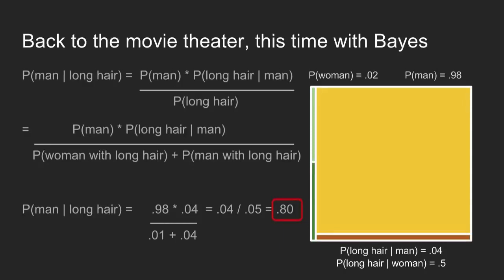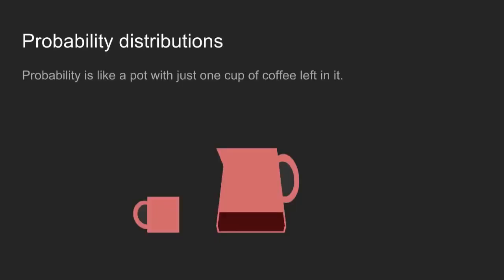This example shows the mechanics of how to get Bayes' theorem and how it works. In practice, it's usually used a little differently. To show this, we'll have to do a little bit of a detour and first talk about probability distributions.